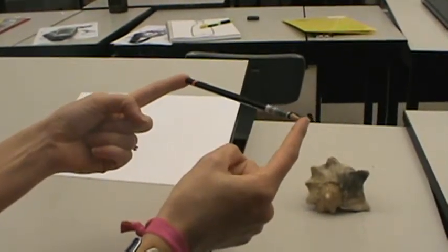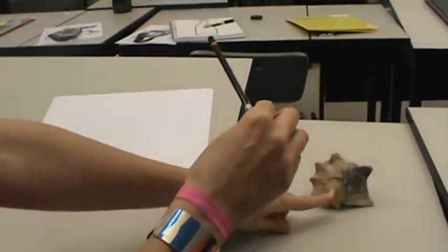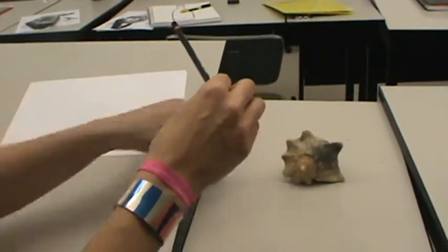You'll have to close one eye because otherwise you'll get a double image, and then turn your pencil so that one side of your pencil lines up with this side of the axis and the other lines up at this side.